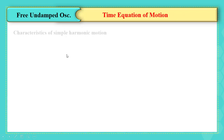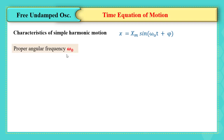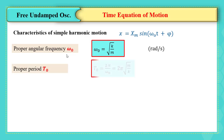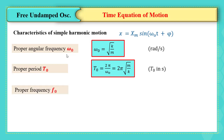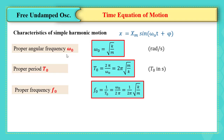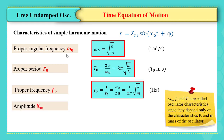The time equation for simple harmonic motion is x = xm·sin(ω₀t + φ). Its characteristics to be studied by heart: the proper angular frequency ω₀ = √(k/m), the proper period T₀ = 2π/ω₀ = 2π√(m/k), the proper frequency f₀ = 1/T₀ = (1/2π)√(k/m), and the amplitude xm. Note that ω₀, f₀, and T₀ are called oscillator characteristics since they depend only on k and m.